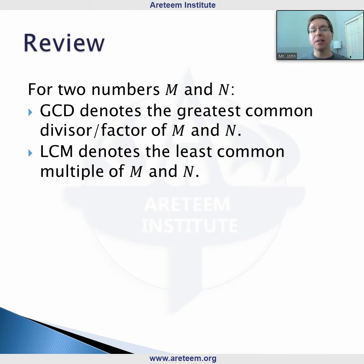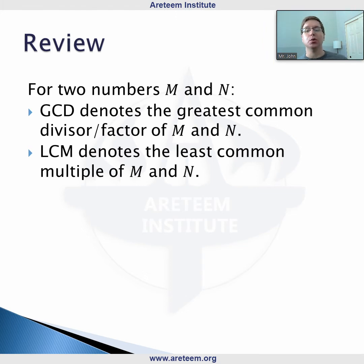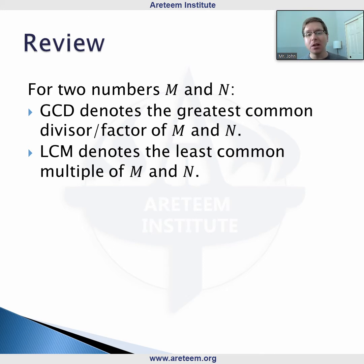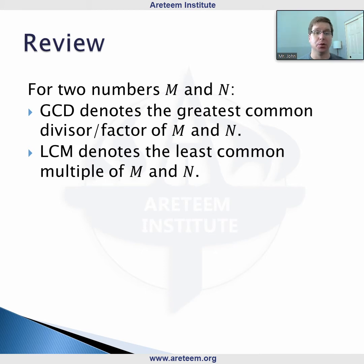The GCD of two numbers is the greatest common divisor of the two numbers. Remember, the divisor is the same thing as a factor, so it's the largest factor that is in common of those two numbers. LCM is the least common multiple of those two numbers — the smallest number that is a shared multiple of those two numbers.